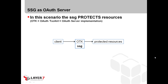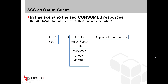Now we will come to the SecureSpan gateway. The SecureSpan gateway has a feature called OTK — OAuth Toolkit — which is an OAuth server implementation. This can be used to protect resources via OAuth. Any client that wants to consume these protected resources has to walk through the OAuth handshake, receive an access token, and present this access token at the gateway. But there is another scenario where the gateway becomes a client.